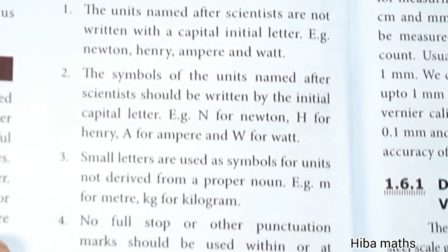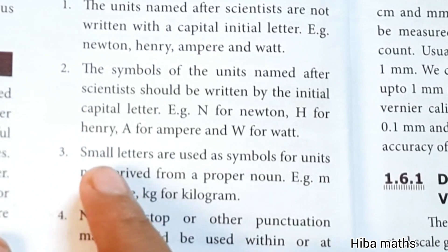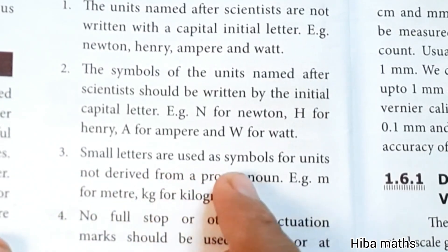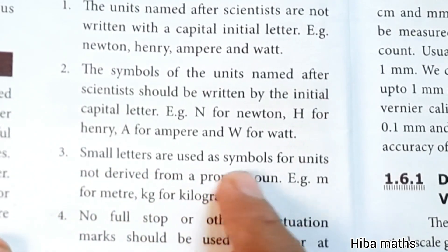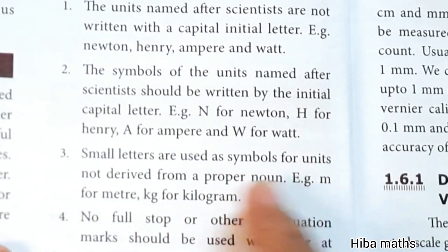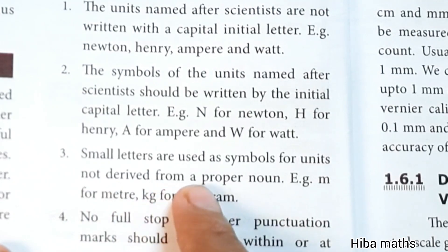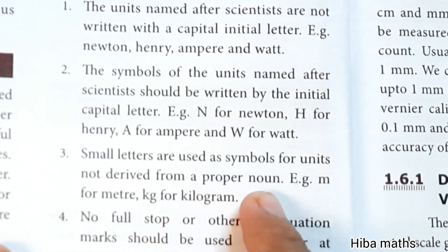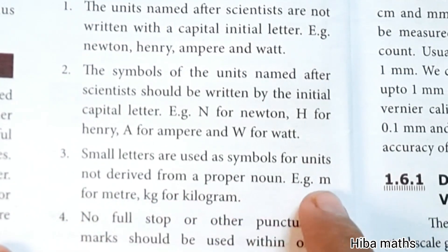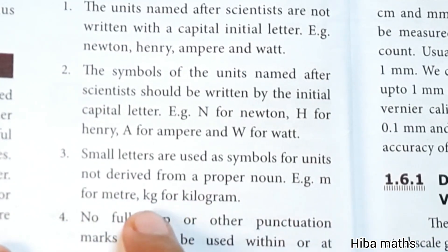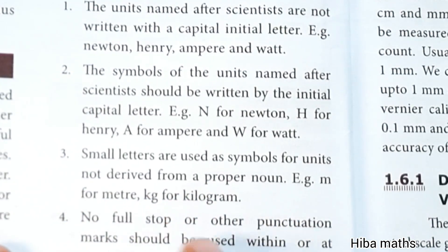Third point: small letters are used as symbols for units not derived from a proper noun. For example, meter is written as lowercase m, and kilogram as kg - these are not written with capital letters.